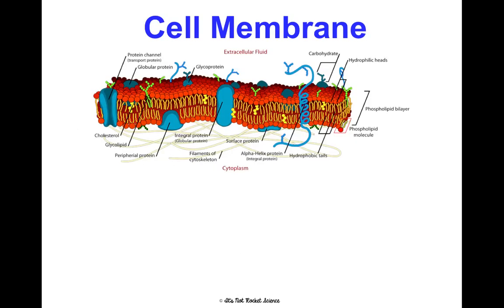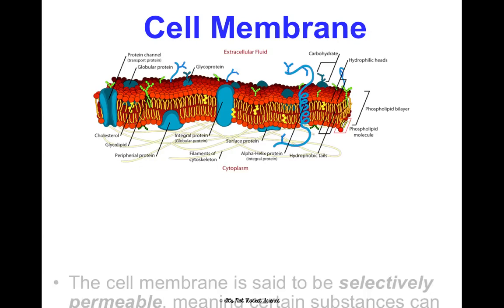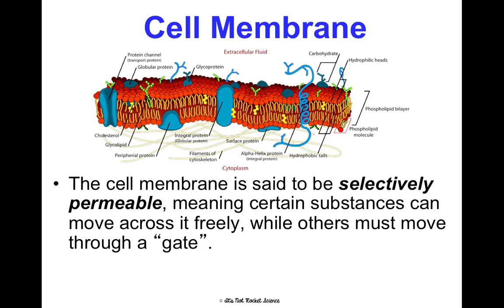The cell membrane has a very complex structure, and because of its structure it is selectively permeable — meaning only certain things can cross it freely. Other things have to go through a protein channel, and some things can't get through at all. So it's picky about what it lets go in and out.